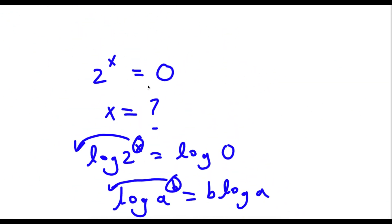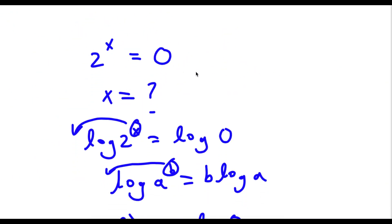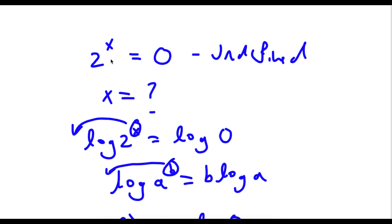This actually makes sense because you can't take anything to the power of something and make it equal 0. So 2 to the power of x equals 0 is undefined. That is our answer.